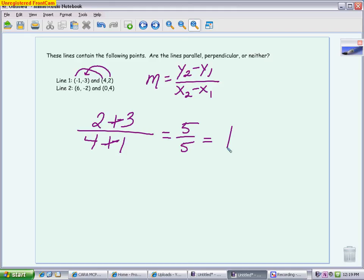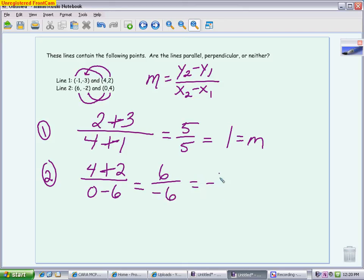This was line one. We have a slope of one. Now with line two, I'm going to do four minus negative two, and then zero minus six. On the top, again, it becomes addition because you have the minus minus. On the bottom, it is negative. When I reduce this, I get negative one. Now I'm ready to compare.